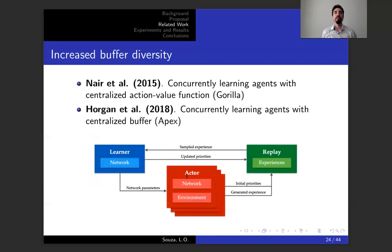It's also important to note some work which are focused on increased buffer diversity. In these works by DeepMind, we have the Gorilla framework from 2015 and Apex from 2018, in which you have agents, but they're not independent agents. In Gorilla, you have a centralized action value function which is shared amongst all agents. In Apex, you also have concurrently learning agents, and they share a centralized buffer.